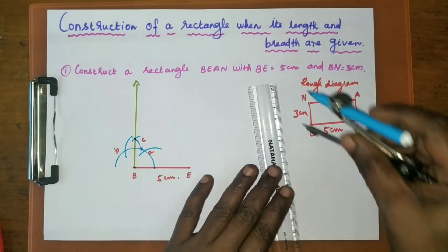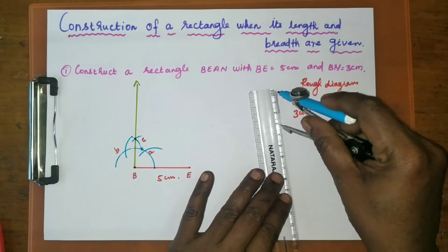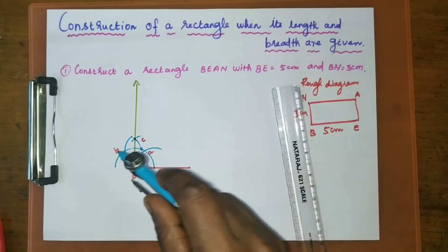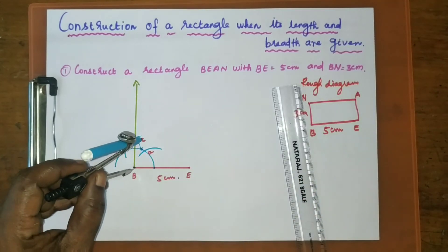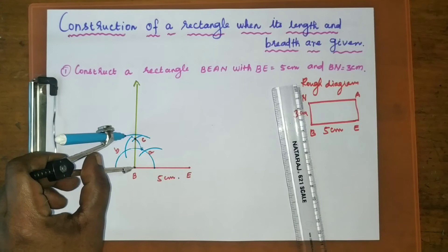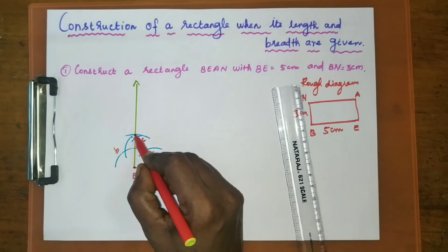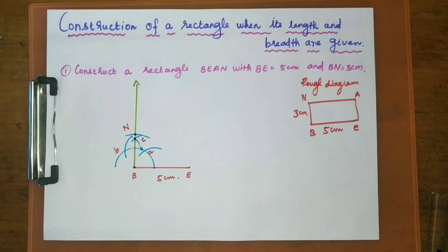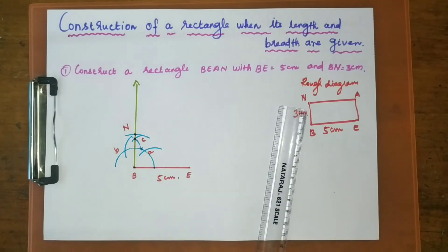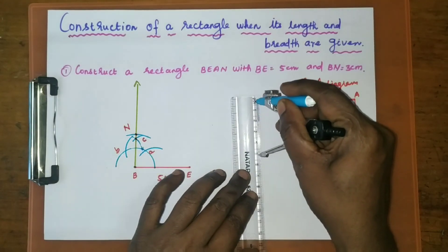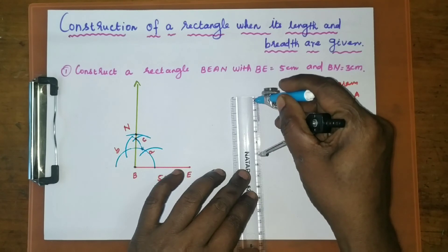Now we have the breadth value, which is 3 cm. Take your compass and set the radius to 3 cm. From B as center, mark one arc on the ray. The point where the arc meets the ray is N. Now from N, we have to mark one arc of 5 cm, because in a rectangle opposite sides are equal.